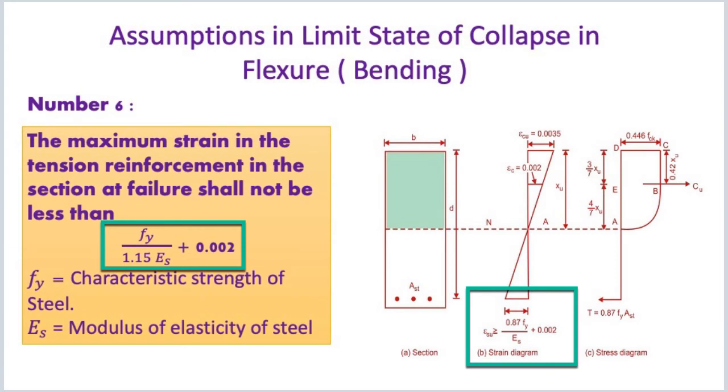Number 6 assumption: The maximum strain in the tension reinforcement in the section at failure shall not be less than f_y divided by 1.15 E_s plus 0.002. Where f_y equals characteristic strength of steel, and E_s equals modulus of elasticity of steel.